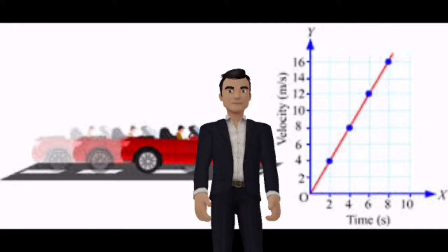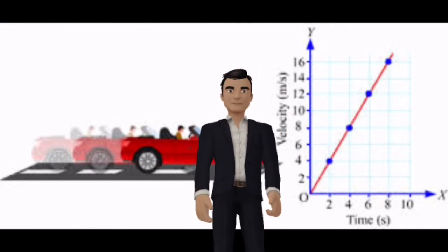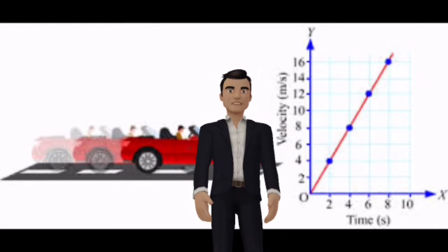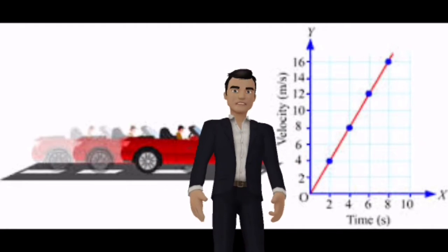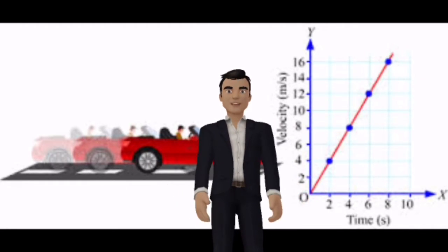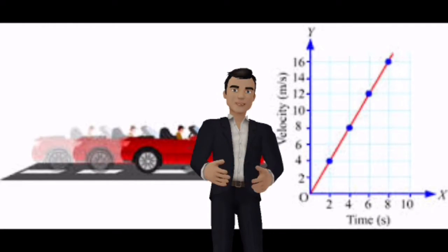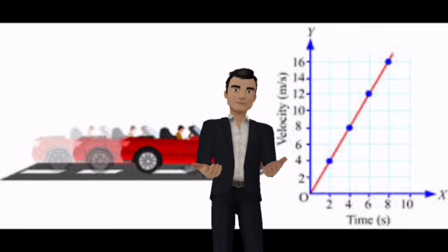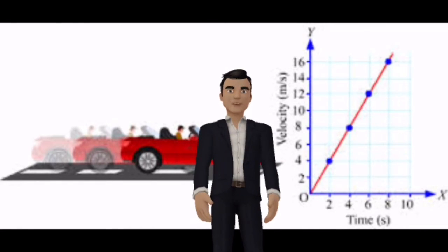This car is not in uniform motion. This is because if you look at the chart, it does not have a constant velocity. The velocity is increasing as the time increases. And because to be in uniform motion you have to have a constant velocity, this object cannot be in uniform motion.